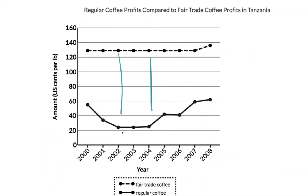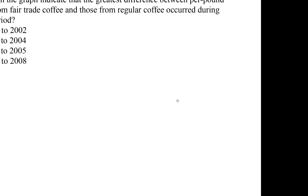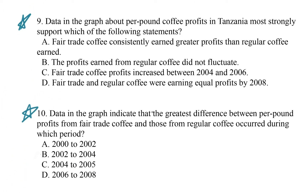Here's the graph. The dotted line represents fair trade coffee, the unbroken line represents regular coffee. The y-axis is the dollar amount or cents per pound of profit, and the x-axis is the year. The dotted line — fair trade coffee — is always above regular coffee, so fair trade coffee always made more profit than regular coffee between 2000 and 2008. The two lines don't cross, and fair trade coffee's profit remains pretty stable, whereas regular coffee's profit wiggles a little bit.